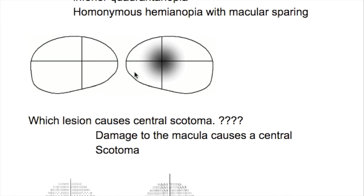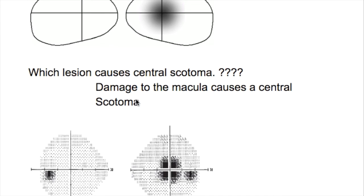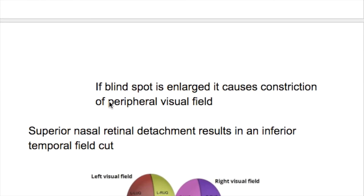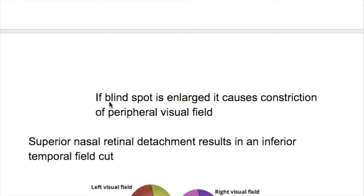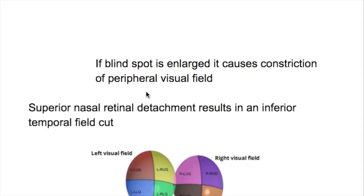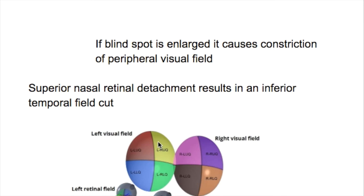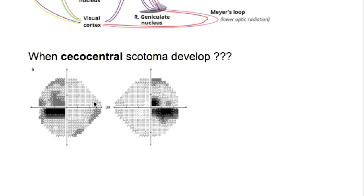Damage to the macula causes a central scotoma. If the blind spot is enlarged, it causes constriction of the peripheral visual field also. A superior nasal retinal lesion or superior nasal retinal detachment results in an inferior temporal visual field defect.